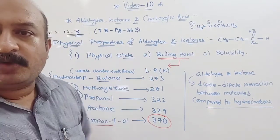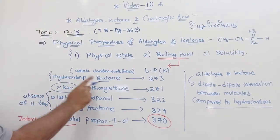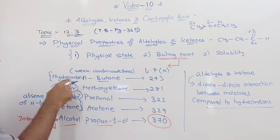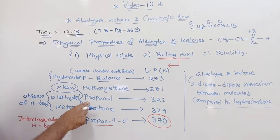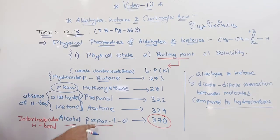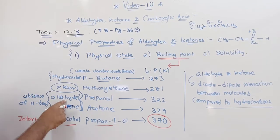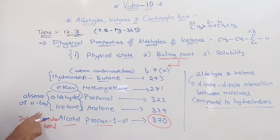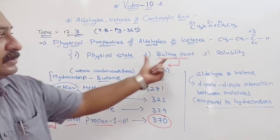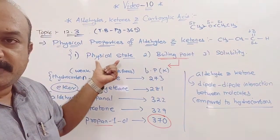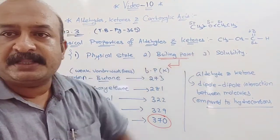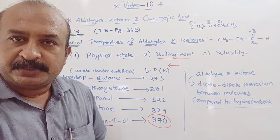To summarize the boiling point discussion: hydrocarbon has weak van der Waals forces; ether has less dipole-dipole interaction compared to aldehyde and ketone; aldehyde and ketone have an absence of H-bond compared to alcohol; and alcohol has more hydrogen bonding. Now the last aspect is solubility.